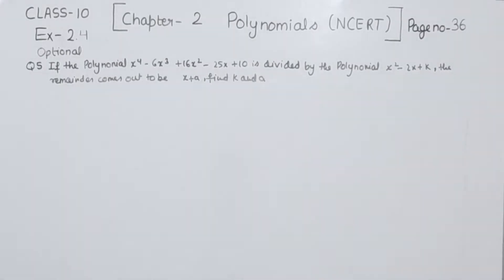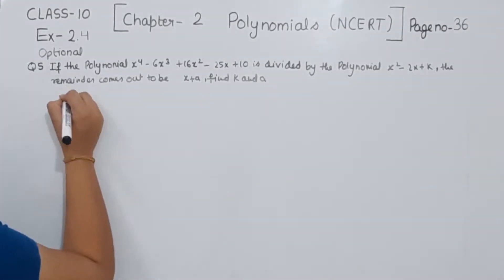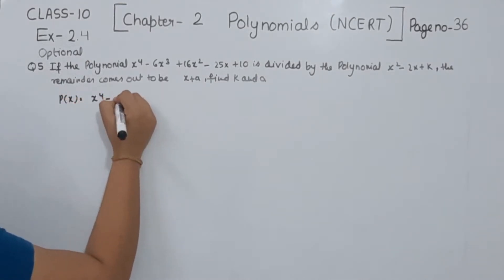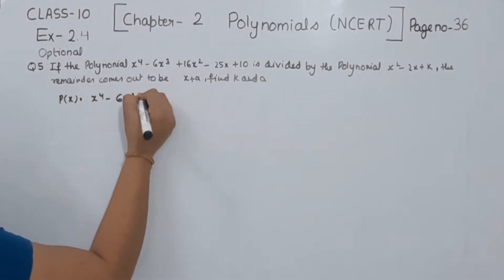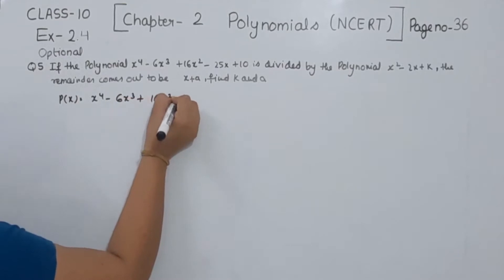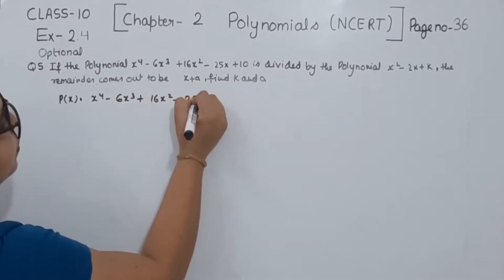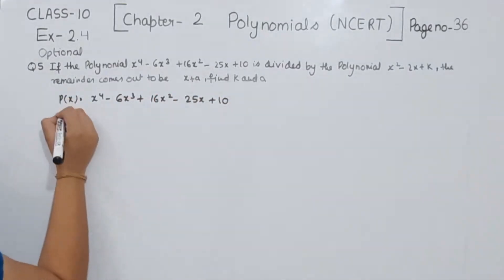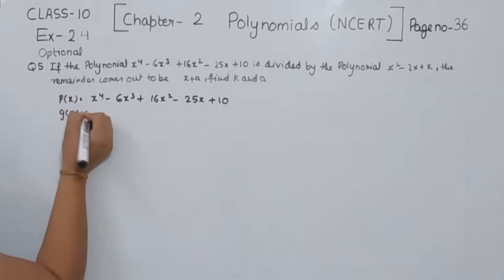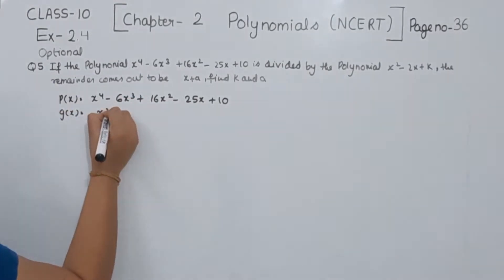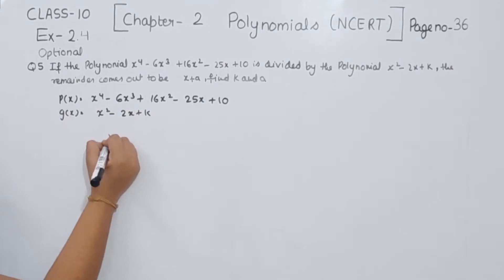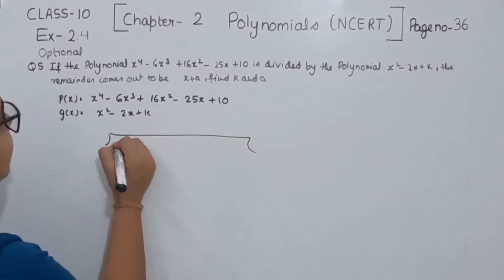So we have to find the value of k and a. P(x) is equal to x to the power 4 minus 6x to the power 3 plus 16x squared minus 25x plus 10. And we have to divide this by G(x), that is x squared minus 2x plus k. So first of all we are going to start dividing.